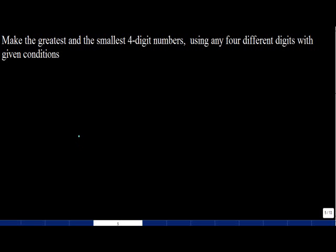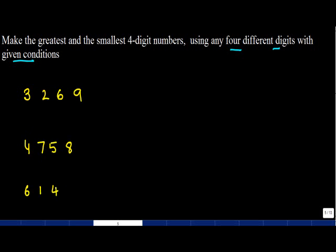Make the greatest and the smallest four-digit numbers using any four different digits with a given condition. For example, I give you four numbers — these numbers can be anything, like 3, 2, 6, 9 or 4, 7, 5, 8, or 6, 1, 4, 2 — and you have to make four-digit numbers where the condition is to find both the greatest and the smallest number.